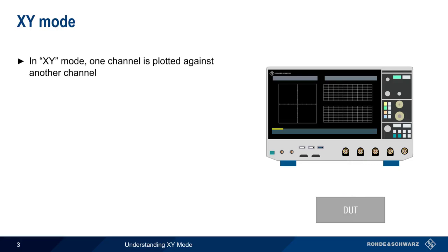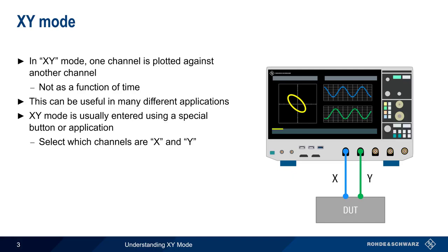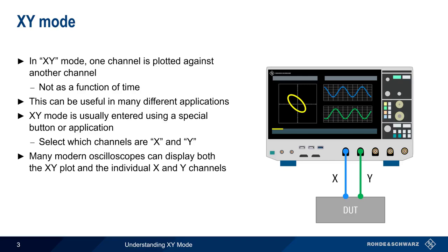XY mode involves two channels, but in this case one channel is being plotted against, or as a function of, another channel, instead of being plotted as a function of time. This can be very useful in many different applications. XY mode is usually entered using either a special button or application, and the user typically can also select which channel will be X and which channel will be Y. The plot of X versus Y is then displayed on the oscilloscope screen. Note that many modern oscilloscopes can display the individual X and Y channels together with the XY plot, which can be very helpful in both configuring and troubleshooting XY mode operation.